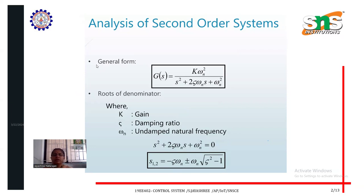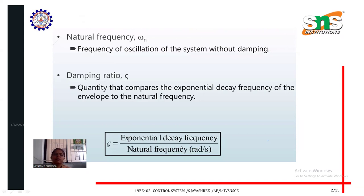If you take the roots, this is a quadratic equation, there are two roots. S1 and S2, the roots are minus zeta omega n plus or minus omega n square root of zeta squared minus 1. These are the two roots of this equation. Natural frequency omega n is frequency of oscillation of the system without damping.